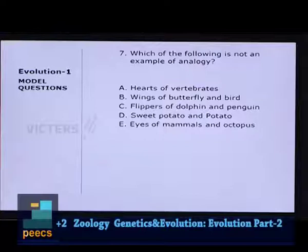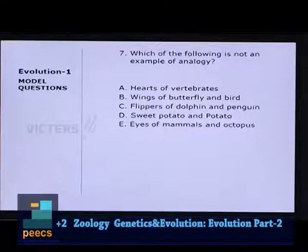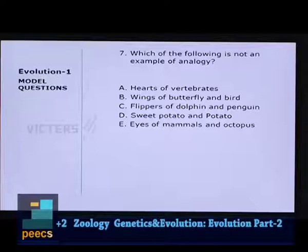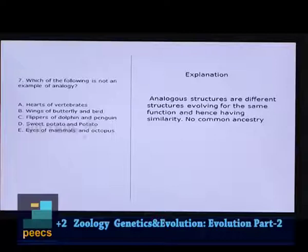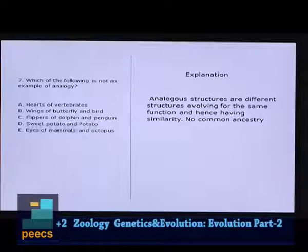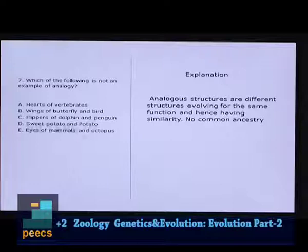Question 7: Which of the following is not an example of analogy? (A) Hearts of vertebrates, (B) Wings of butterfly and bird, (C) Flippers of dolphin and penguin, (D) Sweet potato and potato, (E) Eyes of mammals and octopus. Analogous structures are different structures evolving for the same function. Hearts of vertebrates are homologous, not analogous. All other options are examples of analogous structures. The correct answer is A.